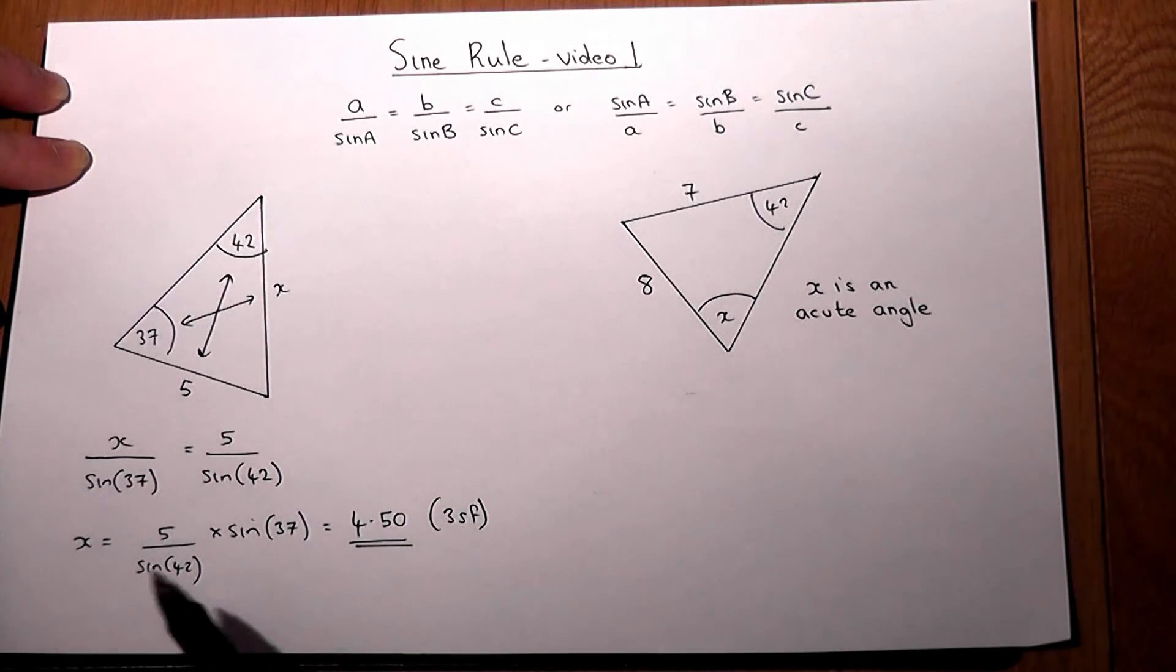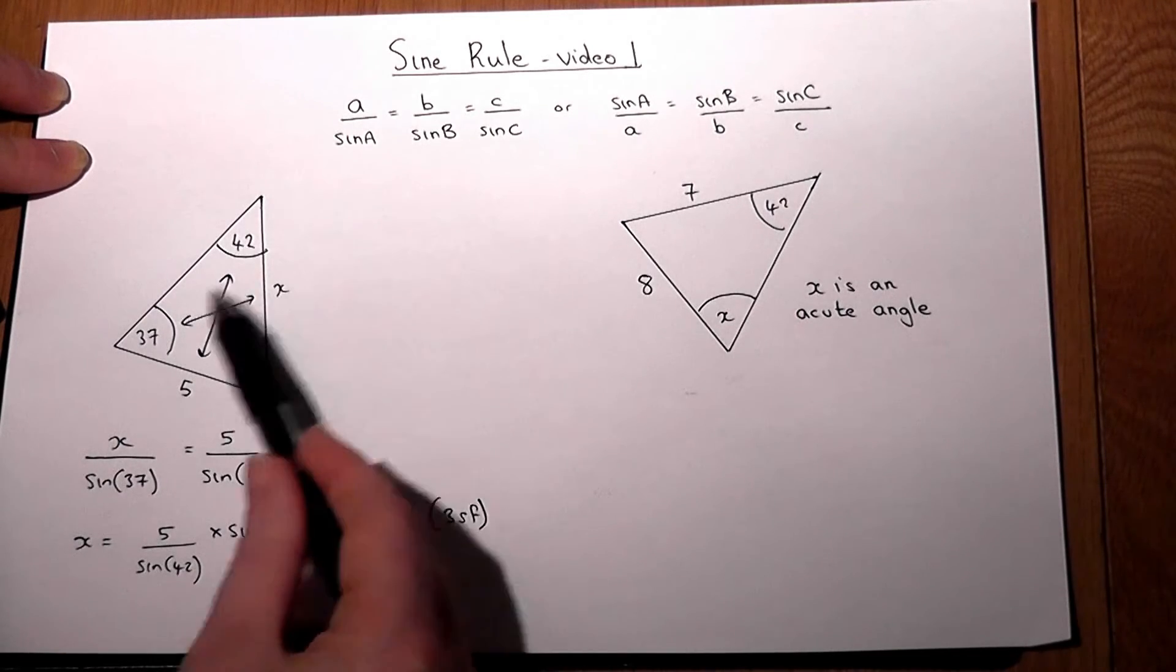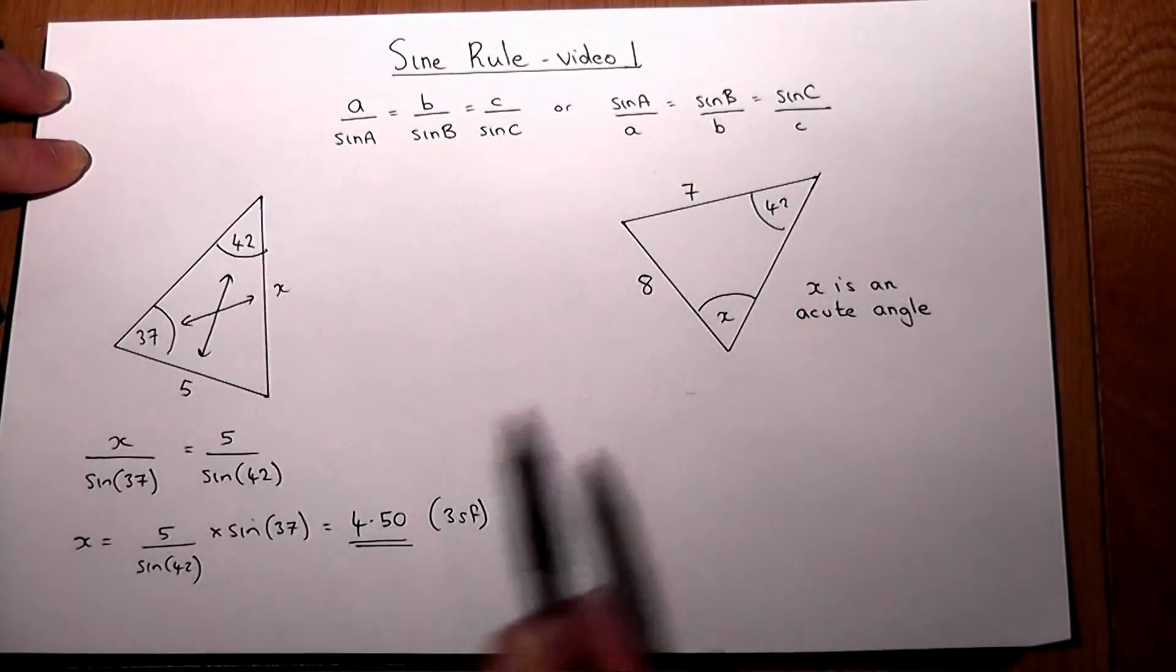The sine rule can be used to find a missing side as long as we have pairs of sides and angles that are opposite. We can also find missing angles.